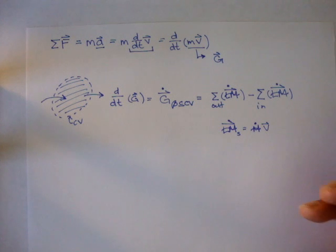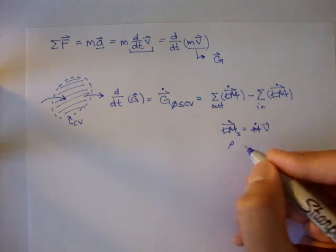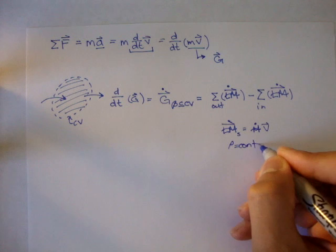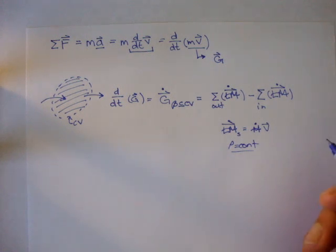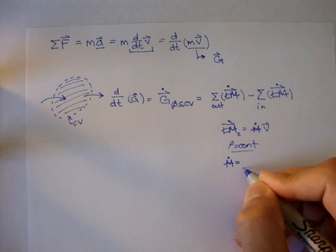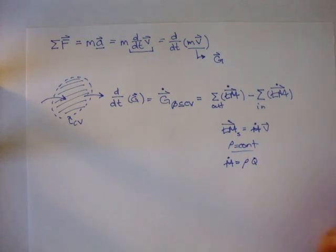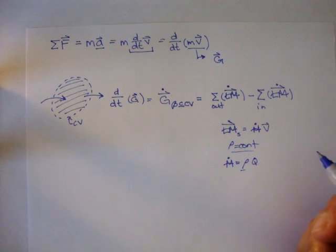And if we said rho, if we said the density of a fluid was constant everywhere, so maybe we're studying water in a hose, if that was constant, we can say that the mass rate is equal to rho times q.